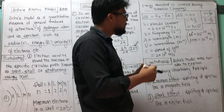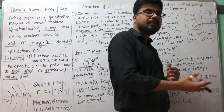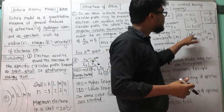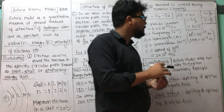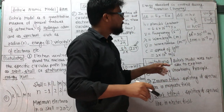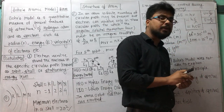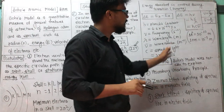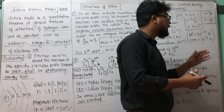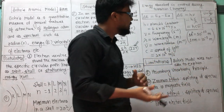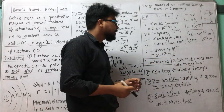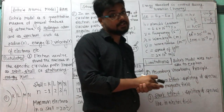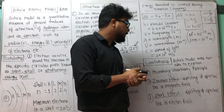Sometimes values may be given in centimeters, angstroms, or nanometers rather than meters, so we need unit conversions. Remember: 1 Angstrom = 10⁻¹⁰ meters, and 1 nanometer = 10⁻⁹ meters. Using these, you can easily convert nanometers to meters, angstroms to meters, or centimeters to meters as needed.